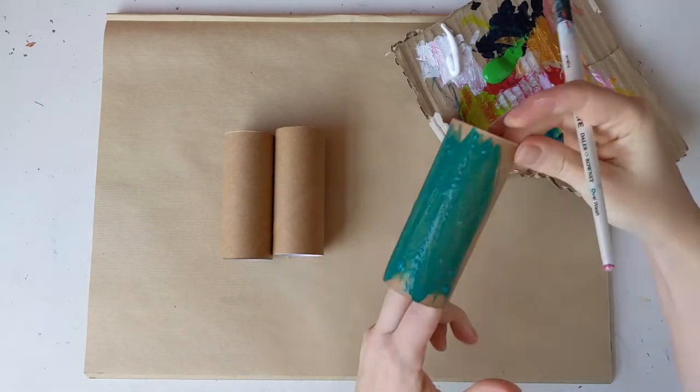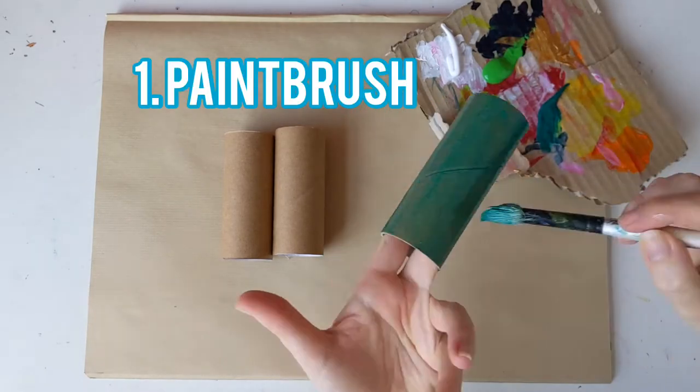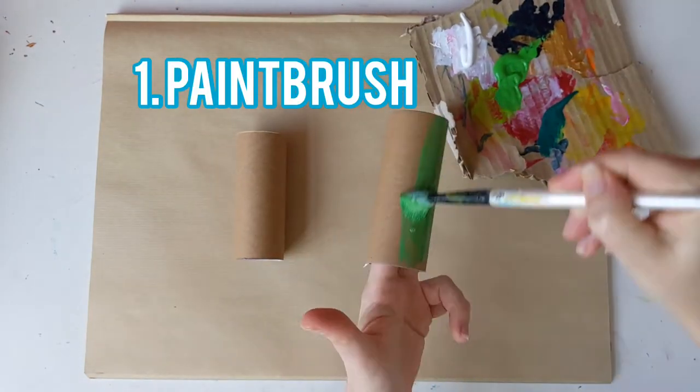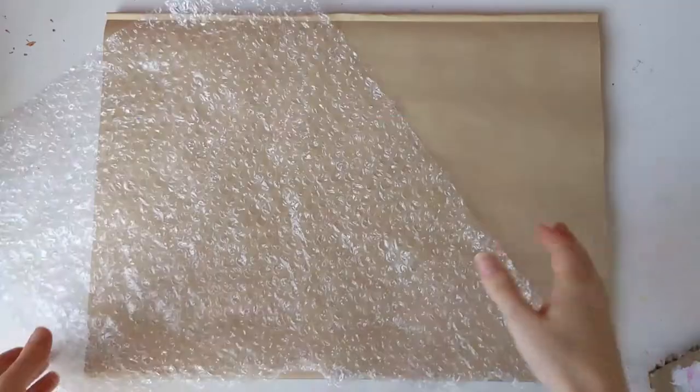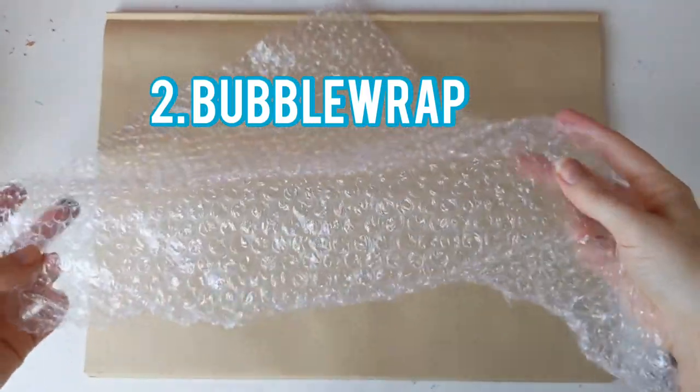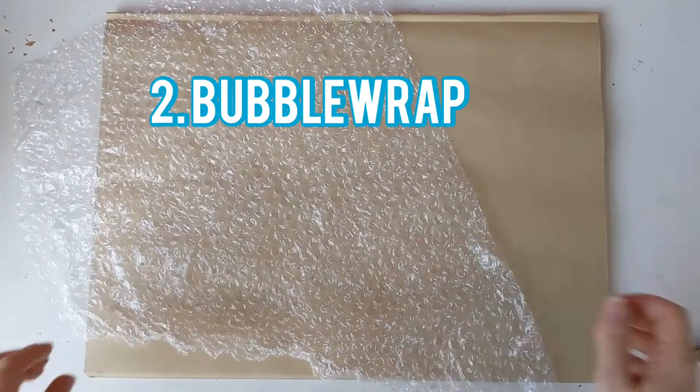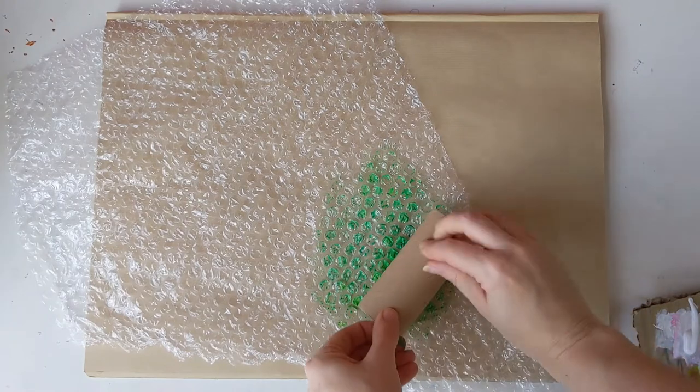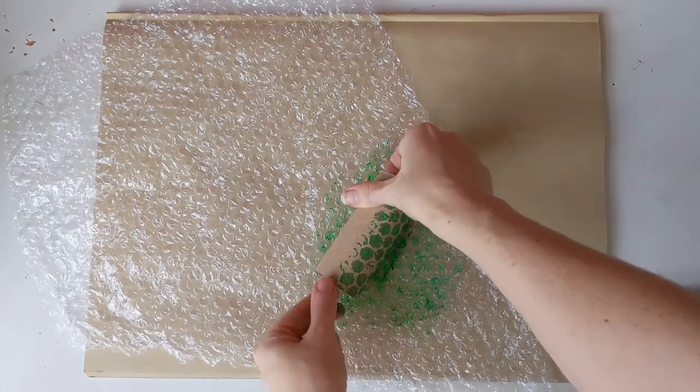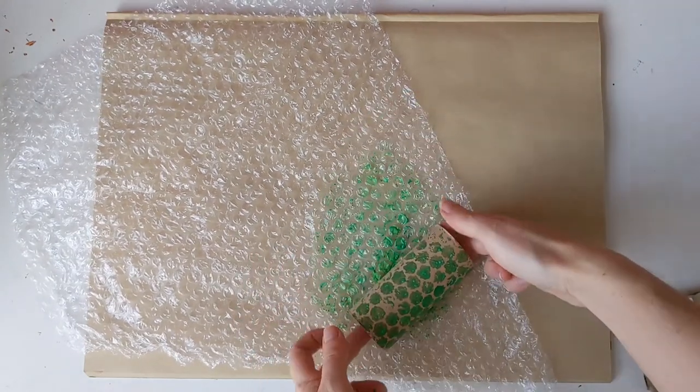First we're going to decorate the toilet rolls with lots of different methods. So first of all we're going to use a paintbrush to paint some of the sections green. Next I'm going to use some bubble wrap. This gives a really interesting effect and makes it look a bit like scales on our snake. So I paint the bubble wrap and then just roll the toilet roll over the paint like this.